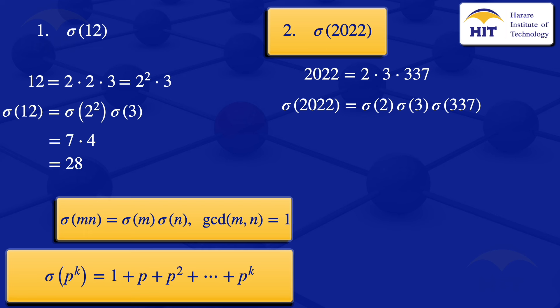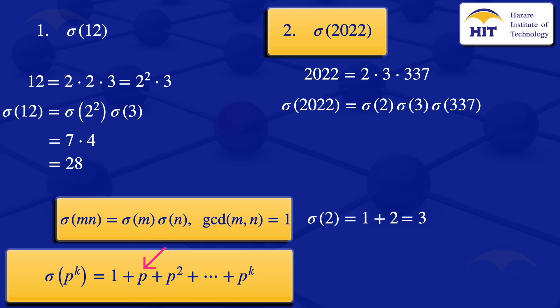We evaluate sigma(2): 2 is a prime number with k = 1, so using the formula we get 1 + p = 1 + 2 = 3. For sigma(3): 3 is a prime number with k = 1, so sigma(3) = 1 + 3 = 4.